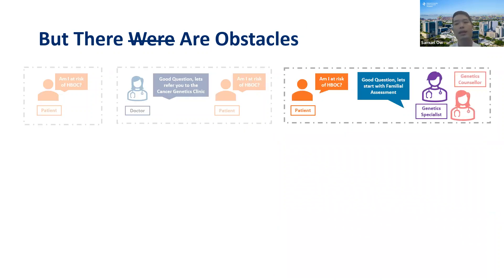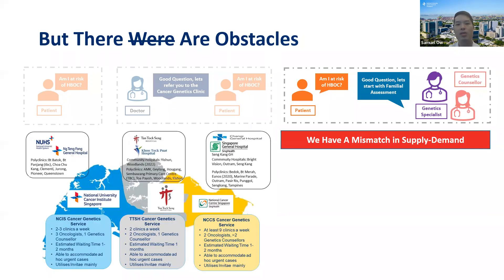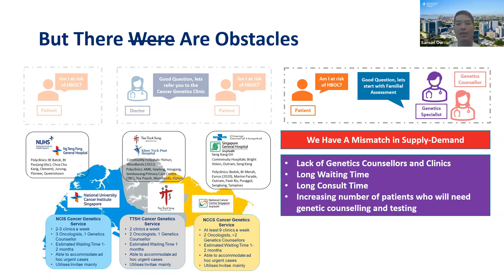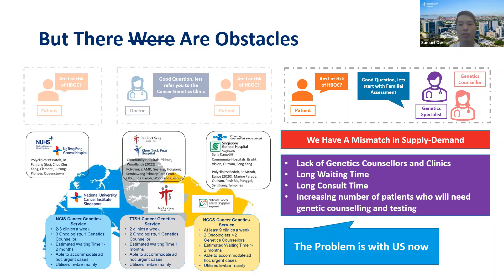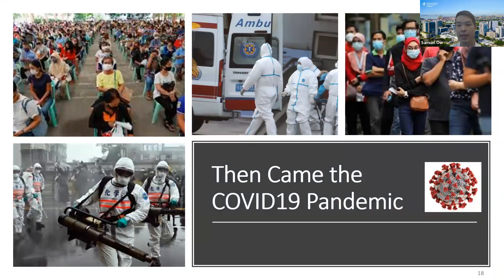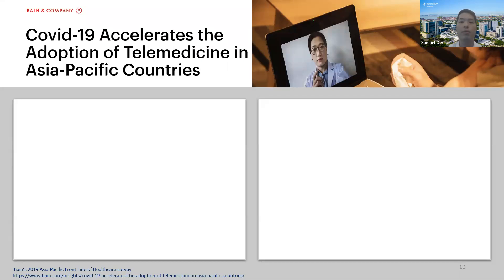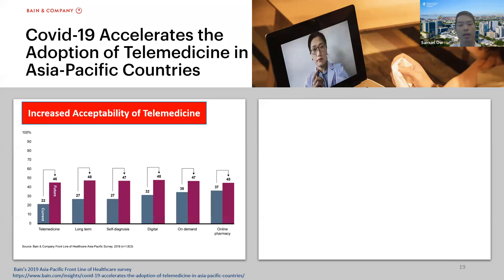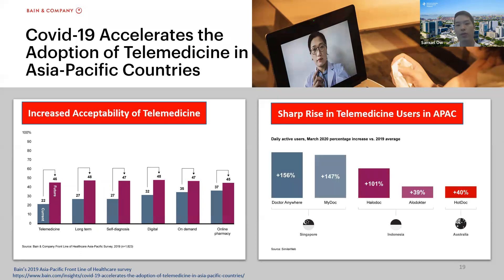But towards the tail end, we still need to see the genetics clinic, and we have a mismatch in supply and demand. Singapore is fortunate — we're a small country with lots of resources — but even our resources are limited. We don't have enough cancer genetic counselors, not enough clinic space, with long waiting times and long consult times, yet an ever-increasing number of patients who require genetic counseling and testing. Then came the COVID-19 pandemic, which actually accelerated the adoption of telemedicine in Asia Pacific by three to seven years, increasing public and healthcare professionals' acceptability of telemedicine, with a sharp rise in telemedicine users.